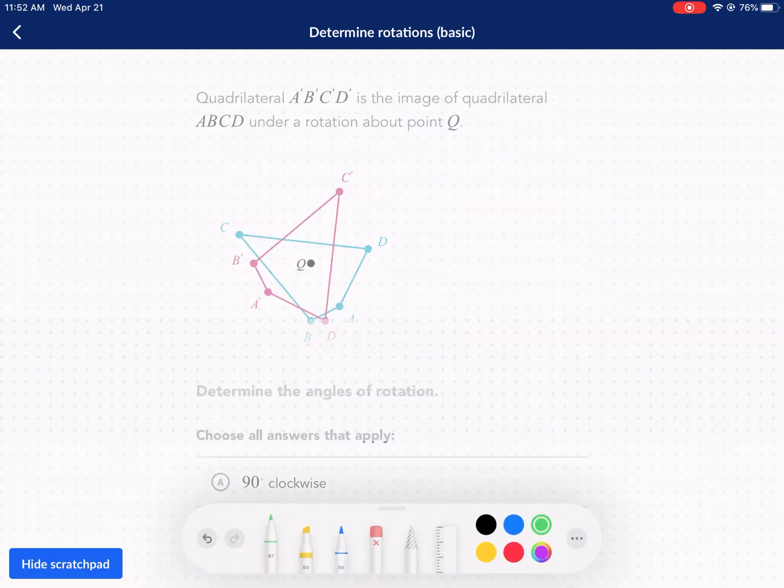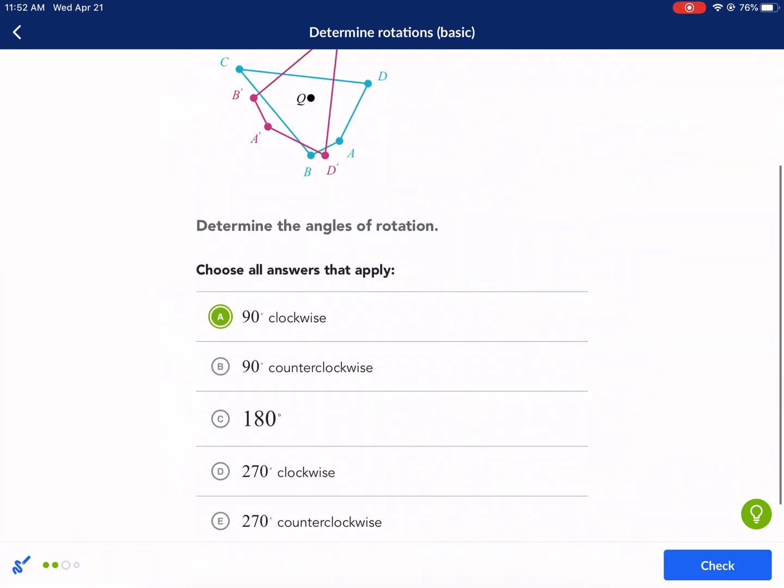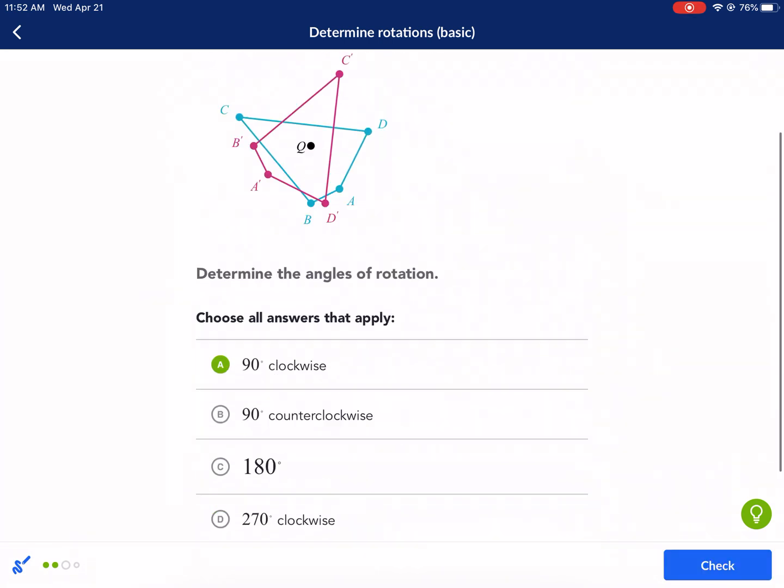Next question. Ooh, this one looks good. So again, highlight the center. Connect each point right here. Okay, so we have that, the 90 degrees. And we're going this way. So it looks like 90 degrees clockwise. Clockwise, so 90 degrees clockwise is the same thing as 270 degrees counterclockwise.